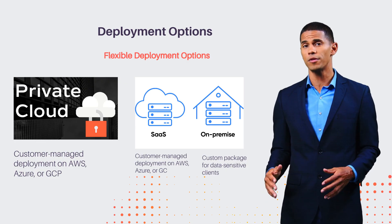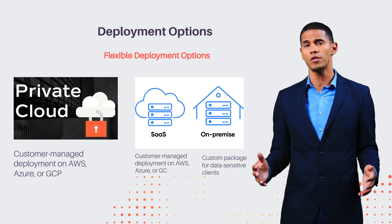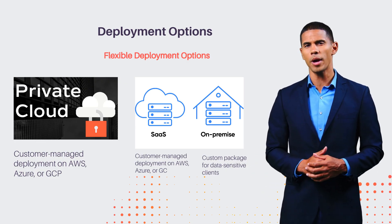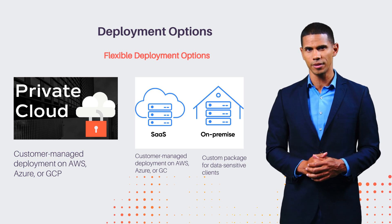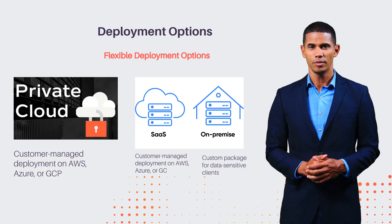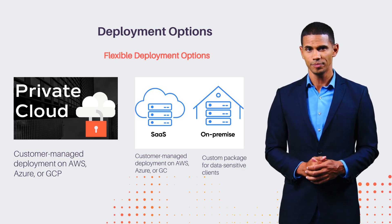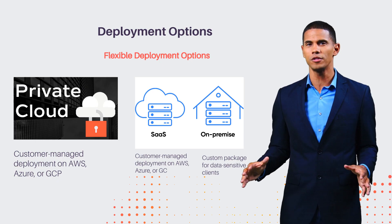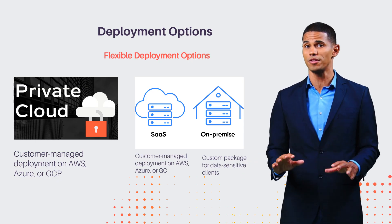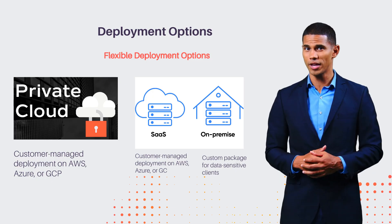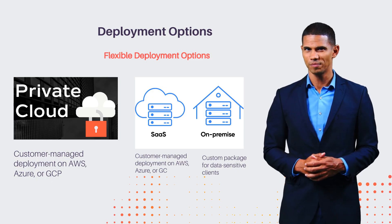Gravitas ETRM offers flexible deployment options: Software as a Service for fully managed services, private cloud for customer-managed environments on AWS, Azure, or Google Cloud Platform, and on-premise for data-sensitive clients. These options ensure tailored solutions to meet diverse organizational needs, providing adaptability and control over data management and infrastructure.